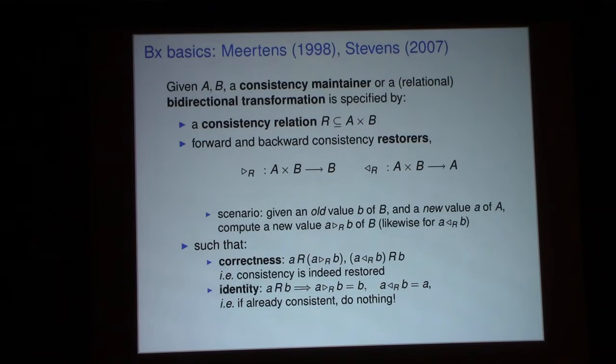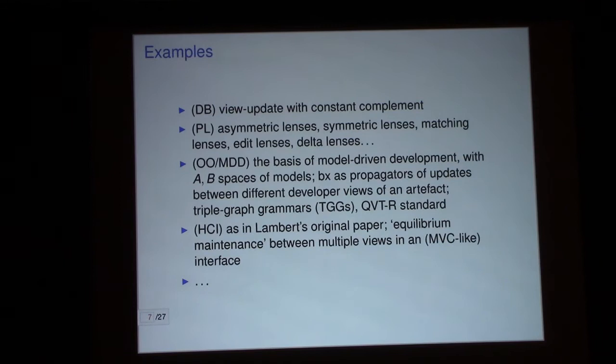So this is first formalized already in the HCI literature by Lambert-Mertens with the idea of consistency maintainer. And for the simply typed view, we just have a subset of A cross B defining consistency, and functions with those two very simple types associated with correctness and consistency conditions which enforce this basic picture. So if R holds between models, then we shouldn't actually change when we update, that's a condition I'll return to later, but also after restoration, we should indeed enjoy the consistency relation. So we want correctness and somehow a conservativity property.